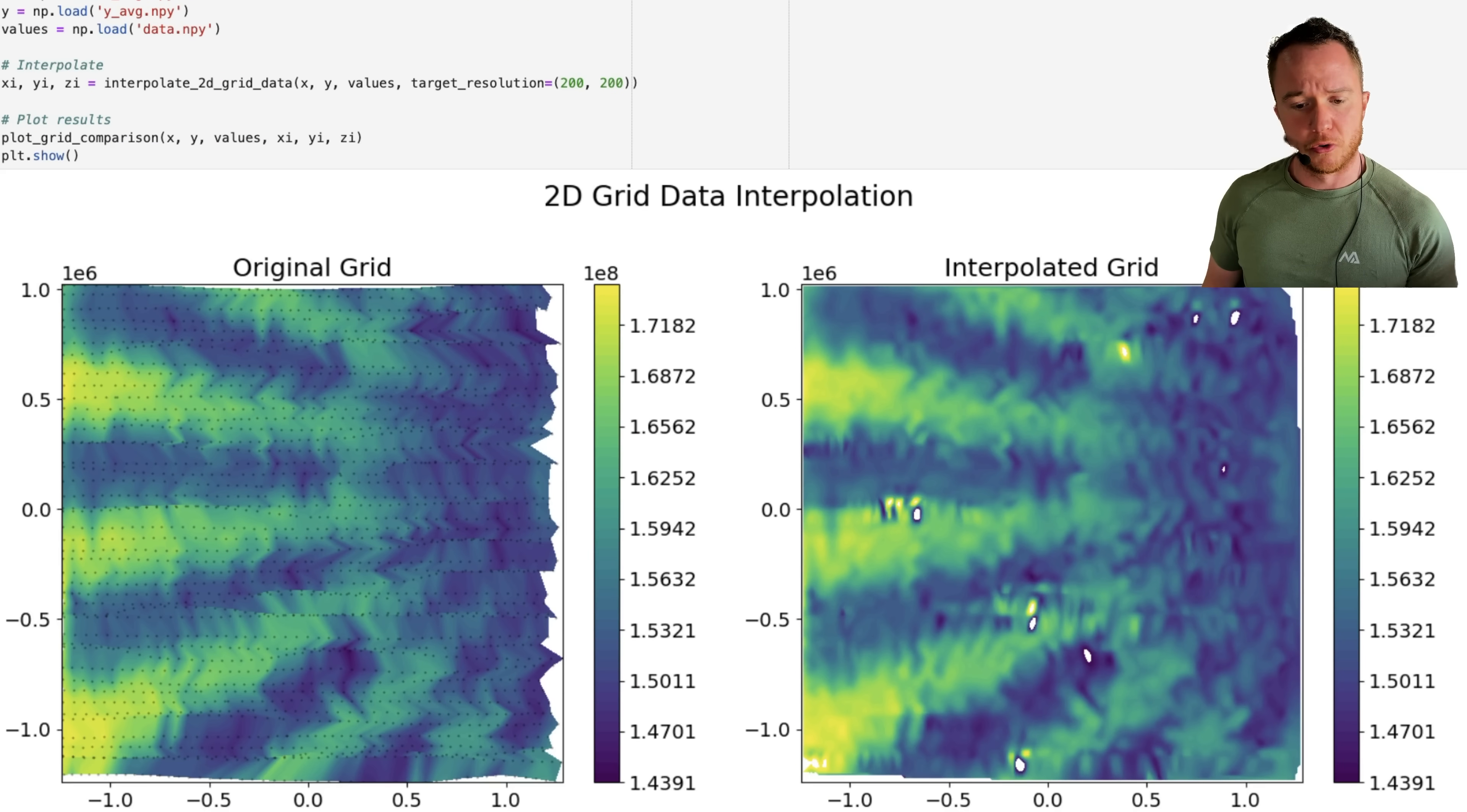On the left, you see the original grid points marked in black, and on the right, we have the interpolated data. However, here we see we get some holes in the data, and we're going to fix that in the next steps. But first, let's have a look at the code that Claude gave us.